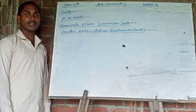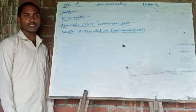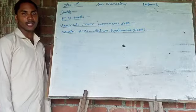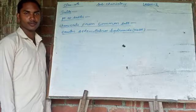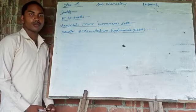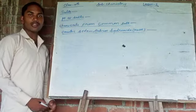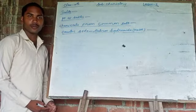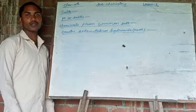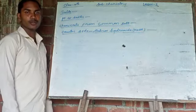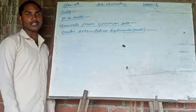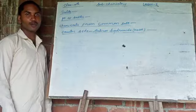Salts are basically ionic compounds which are made up of positively charged ions and negatively charged ions. In solid state, the charges are held together by electrostatic force. But when they are dissolved in liquid or in water, they readily get dissociated and form ions.